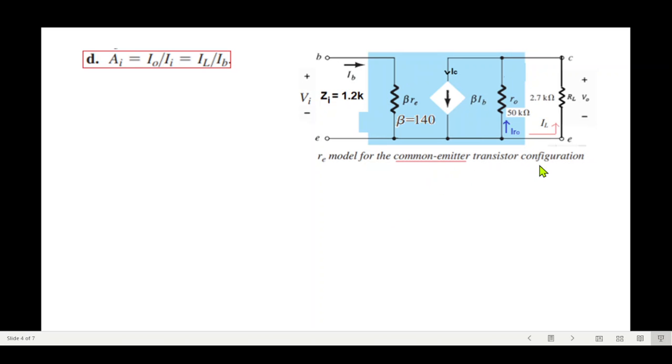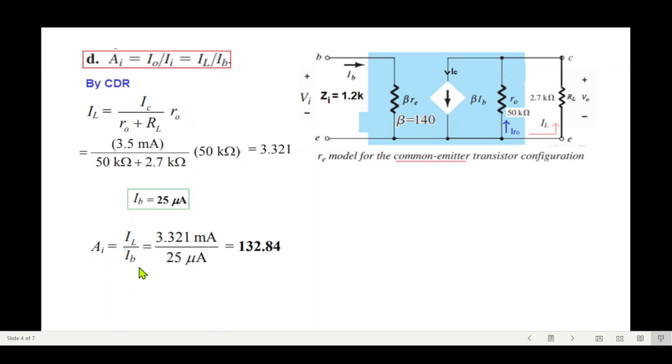Now i load we have to find from this circuit by CDR. You can see this current we know, ic. This current is dividing into two paths, so this path current il will be the total current divided by total resistance multiplied by the opposite arm. We are finding current in this arm, so this is the opposite arm. Plugging in the values, il will be 3.321 milliampere. ib is 25, so plugging in the values here, ai or the current gain will be 132.84.